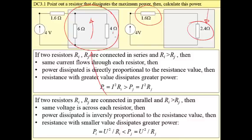In our case it is 4 ohm resistance. Definitely power dissipated by this resistance is greater than power dissipated by 6 ohm resistance.